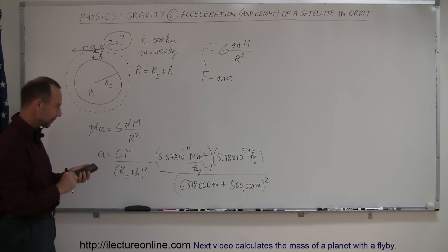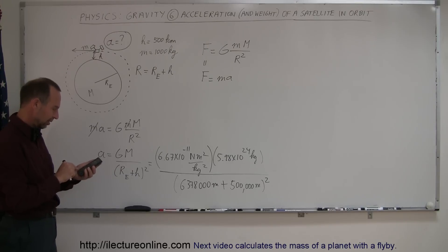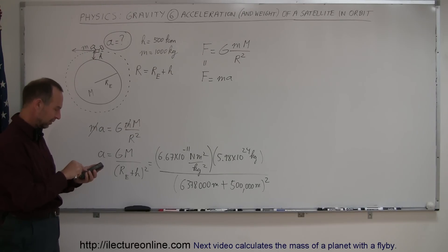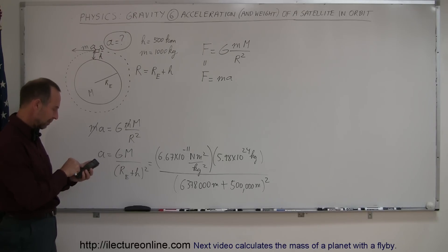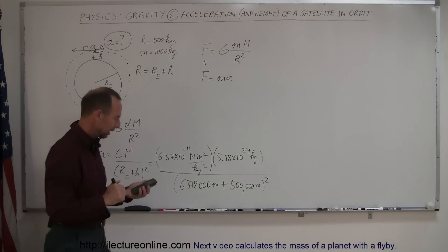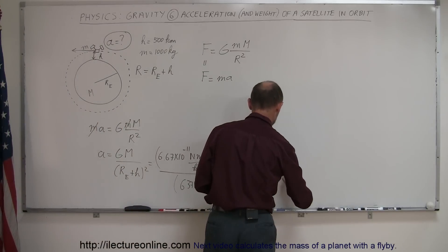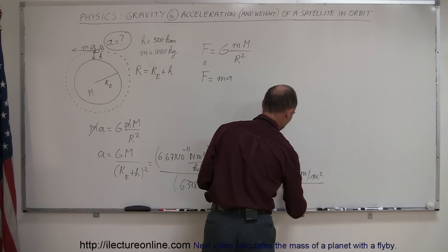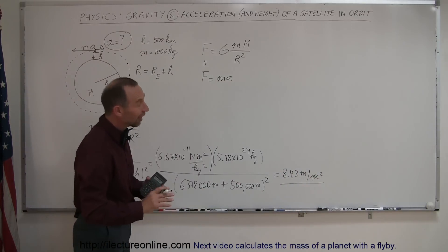We compute: 6,378,000 plus 500,000, square that for the denominator, take 1 over x to bring it to the numerator, then multiply by 6.67×10⁻¹¹ and 5.98×10²⁴. The result is 8.43 meters per second squared. So notice it's not zero, but it's also not 9.8.